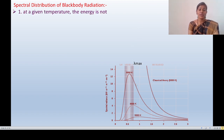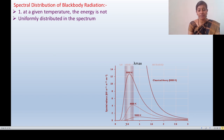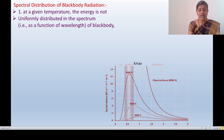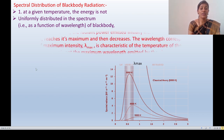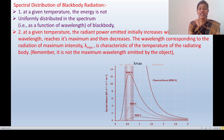From the observations of the graph: at a given temperature, the energy is not uniformly distributed in the spectrum. At a given temperature, the radiant power emitted initially increases with increase of wavelength, reaches its maximum at lambda-max, and then decreases. The wavelength corresponding to radiation of maximum intensity, lambda-max, is a characteristic of the temperature of the radiating body — it is not the maximum wavelength emitted by the object.